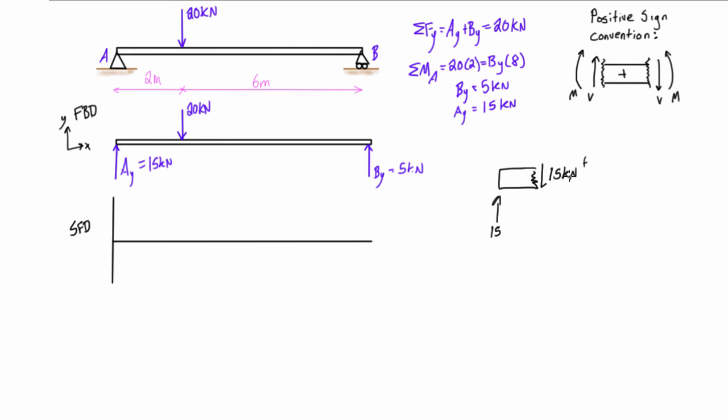So we have the magnitude here is 15 and because of the positive sign convention we know that this is a positive value. So for any distance x that is from 0 to 2 meters this is going to be exactly what we're experiencing. For the first 2 meters we have positive 15 kilonewtons of shear force.